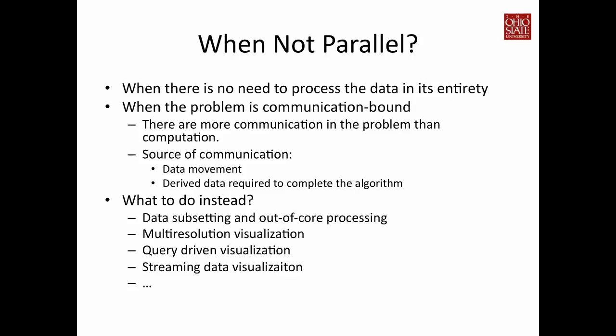The other situation where you do not necessarily want to use a parallel computer is if your algorithm requires a lot of communication between the processors — you may not be able to get the speedup you expected. Communication among processors is still considered one of the most expensive components in the entire computational pipeline, so if your algorithm requires a lot of communication, you will not be able to speed up your computation much.